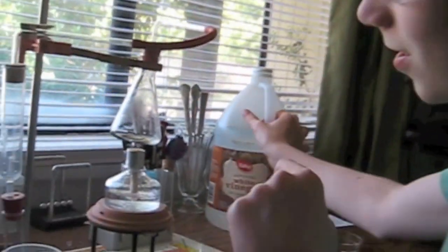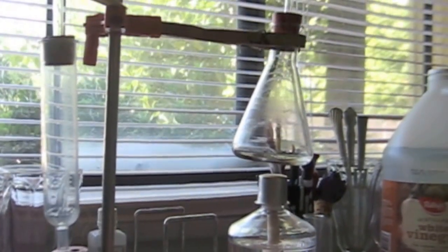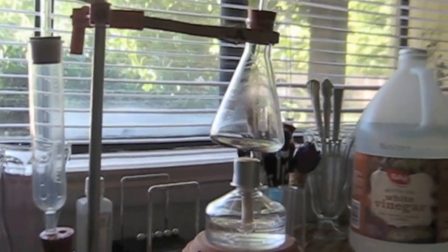Today we're going to try distilling white vinegar. I've got it set up here so the burner will heat the vinegar. The vapor will go through this tube, through this condenser, and condense in this test tube in this margarine cup full of ice water.